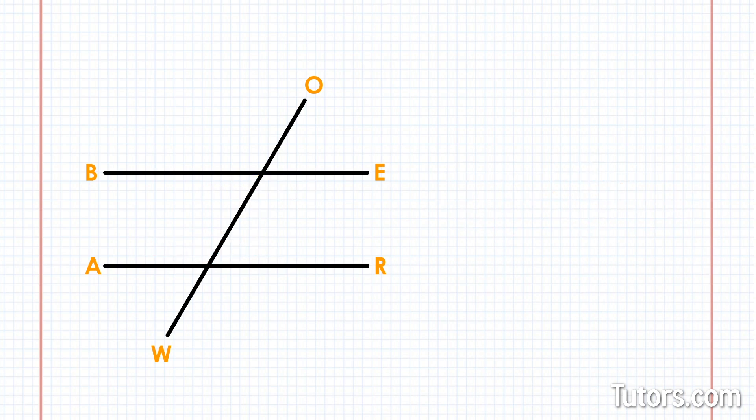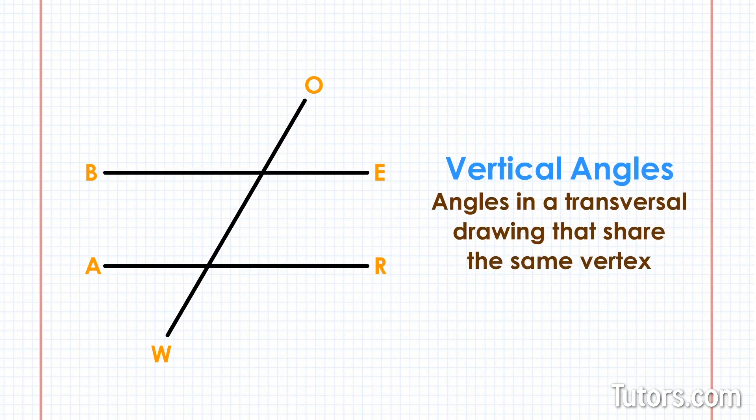Next, let's look at the vertical angles. Angles in your transversal drawing that share the same vertex are called vertical angles. Do not confuse the use of vertical with the idea of straight up and down. You have four pairs of vertical angles: angle Q and angle U, angle S and angle T, angle V and angle Z, angle Y and angle X.